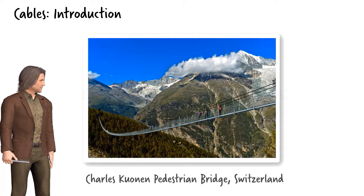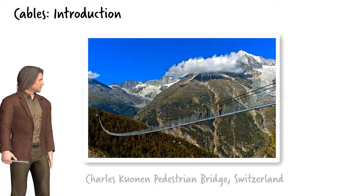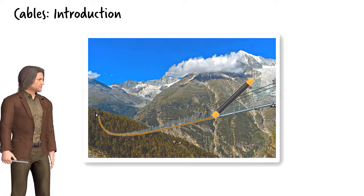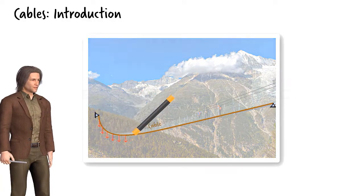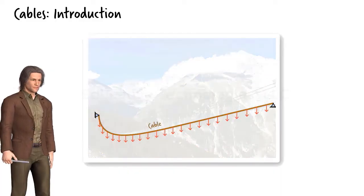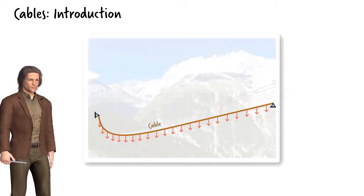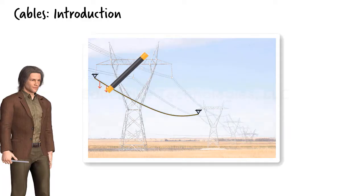Here is another interesting example. Consider this pedestrian bridge where the surface of the bridge deck follows the geometric shape of the cable. In this case, we can conceptualise the entire system as a cable that is hanging freely from its ends, carrying its own weight. This is similar to the behaviour of a power line hanging from two supporting transmission towers.